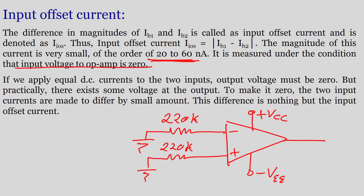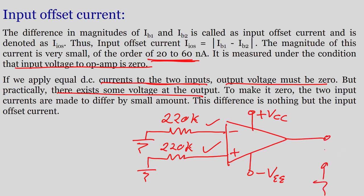If we apply equal DC currents to both inputs, the output voltage should ideally be zero. But in practice, some voltage still appears at the output even when both terminals are grounded or supplied with equal currents. To make the output zero, the two input currents must differ by a small amount — and that difference is the input offset current.